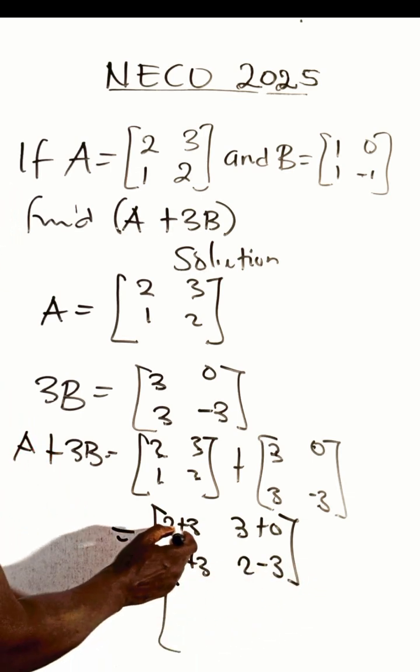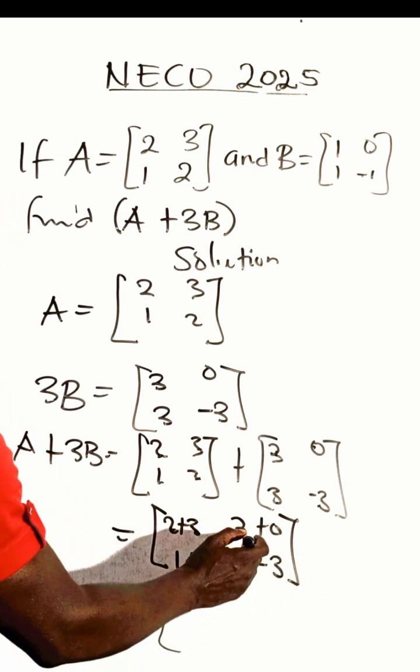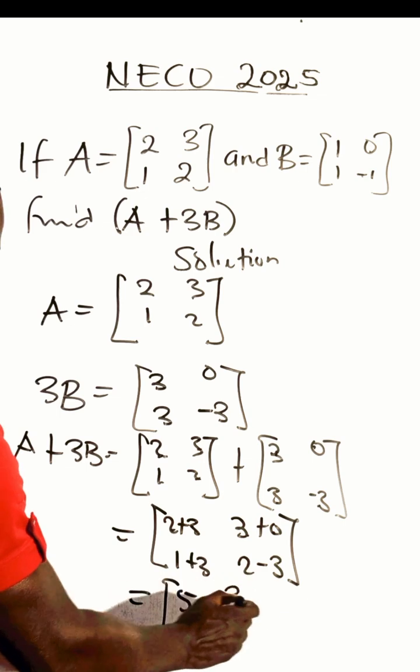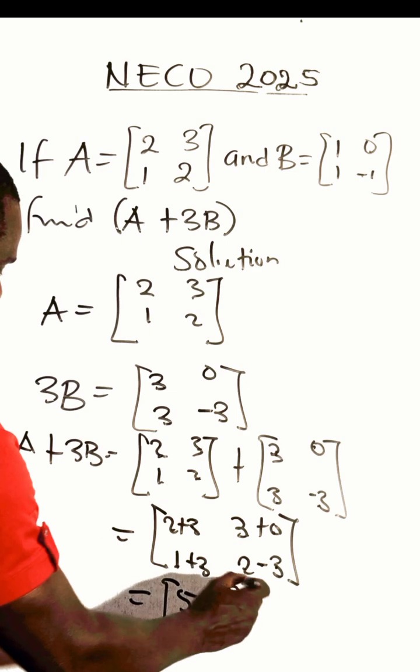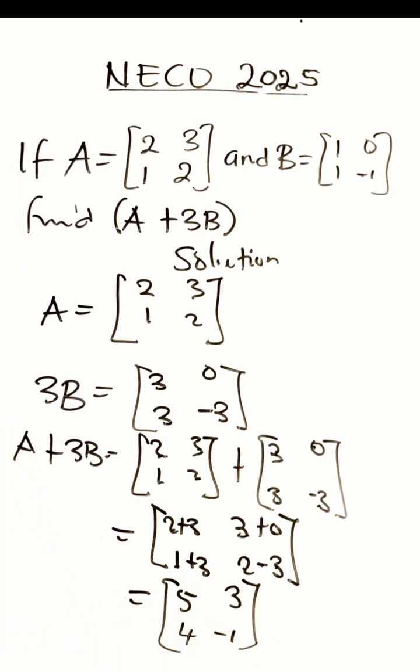And the final answer is 2 plus 3 is 5, 3 plus 0 is 3, 1 plus 3 is 4, 2 minus 3 will be minus 1.